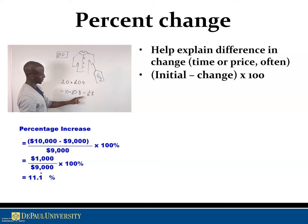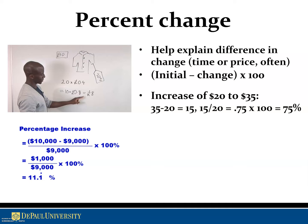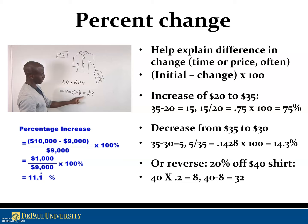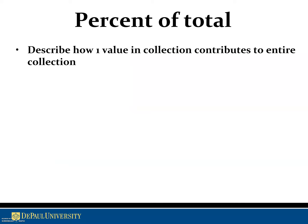Next we'll focus on calculating percentage change, which helps explain the difference in change over time in things like price or frequency. New minus old, divided by old, is the rule of thumb. For example, increasing from 20 to 35: 35 minus 20 gives 15, divided by 20, is a 75% increase. For a decrease from 35 to 30: it's a 14.3% decrease. Similarly, 20% off a $40 shirt — you calculate 10% as $4, double it to get $8 off, making the new value $32.